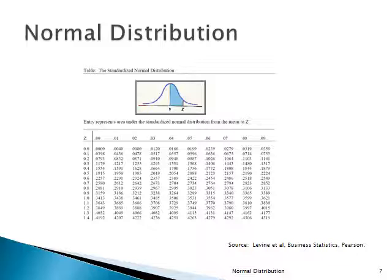How about between 0 and 0.54? We need the Z value of 0.54. Go to the 0.5 row and over to the 0.04 column, and you find the area is 0.2054.